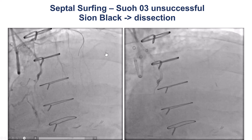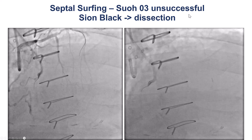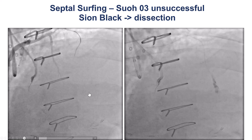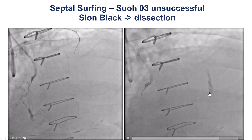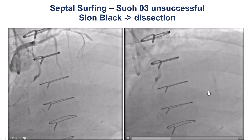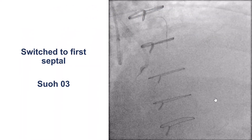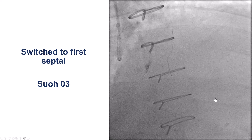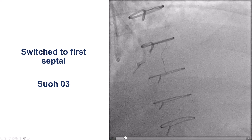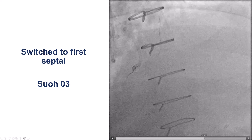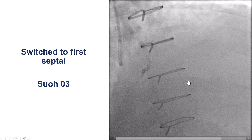We started with septal surfing. We did use a SUO3 guide wire that was not successful, and then we tried a C-on-black. We had some difficulty. The C-on-black is a much more aggressive guide wire, and we did have a dissection of some of the septals without any consequence. Then we changed to a different septal, once again trying different wires — the SUO3 — but again having a lot of difficulty advancing the wire through the septal.